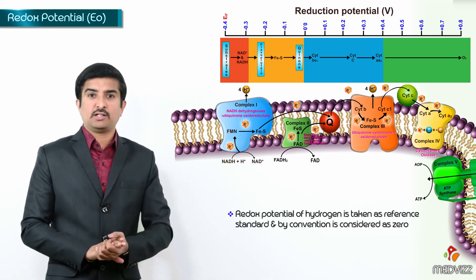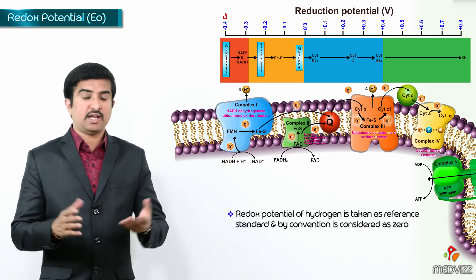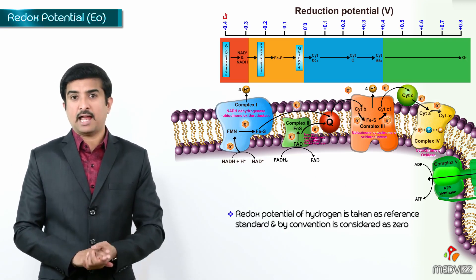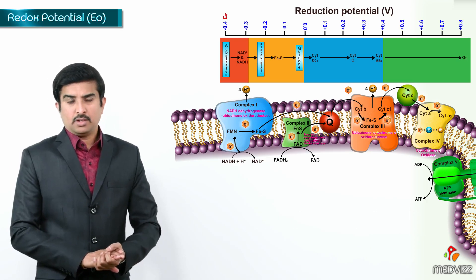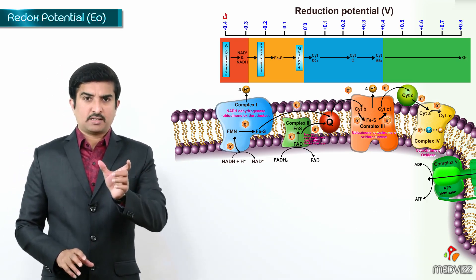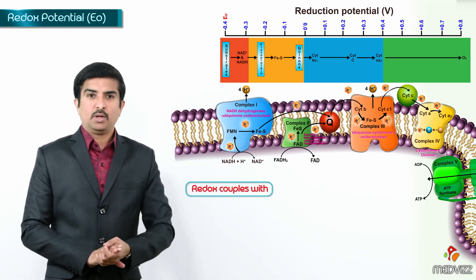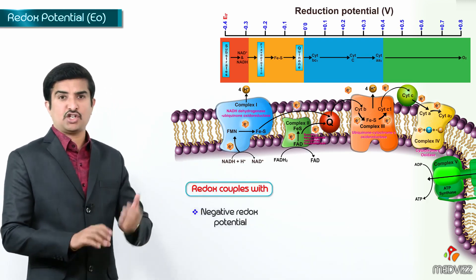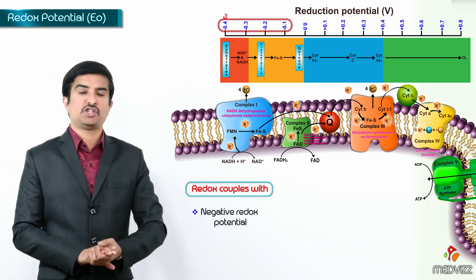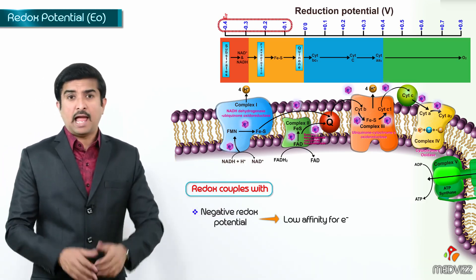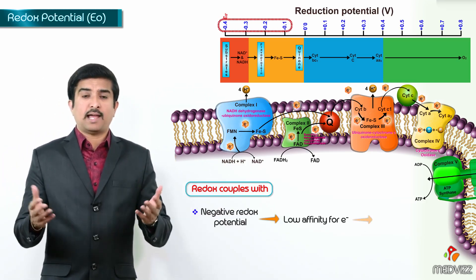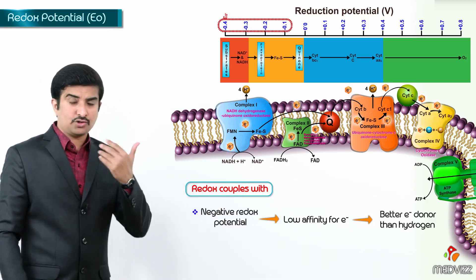So, if you take the redox potential of hydrogen where it is taken as a reference standard and by convention it is considered as 0. So, compounds which means redox couples with a negative redox potential, which means low redox potential, have a low affinity for electrons and therefore they are called as better electron donors than hydrogen.